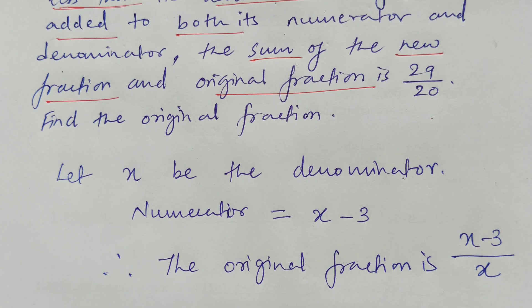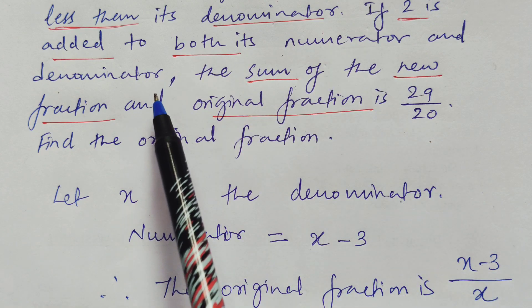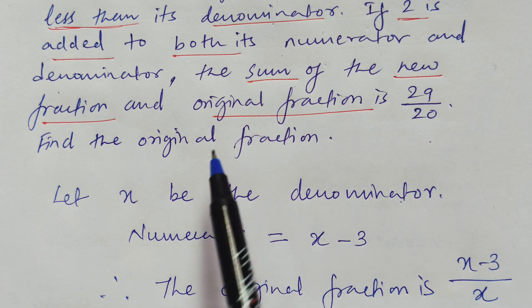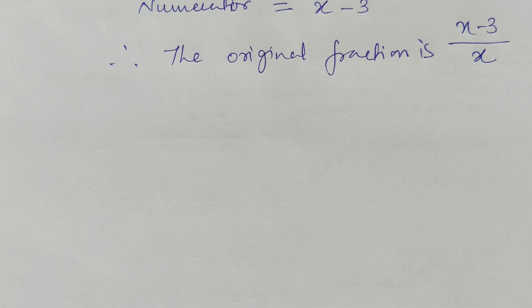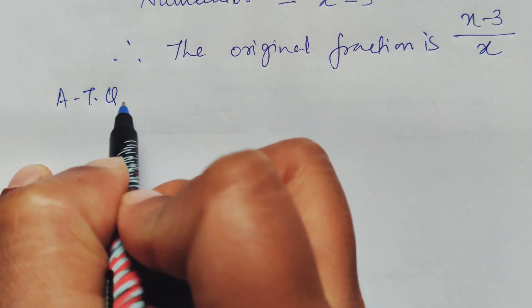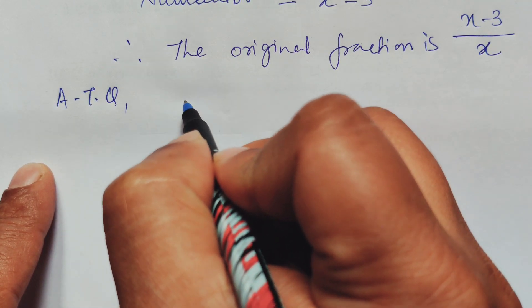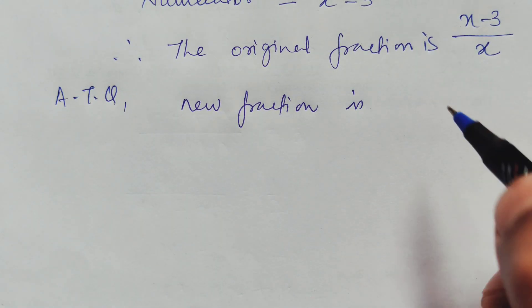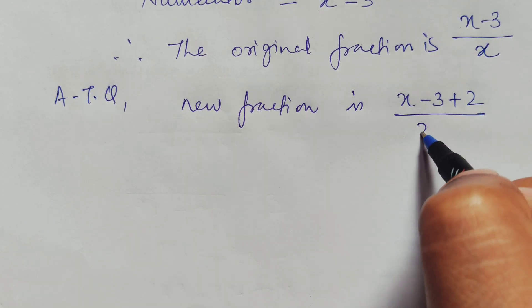Now for the second condition: if 2 is added to both numerator and denominator, the new fraction becomes (x − 3 + 2) divided by (x + 2), which simplifies to (x − 1) divided by (x + 2). The sum of this new fraction and the original fraction equals 29 by 20.